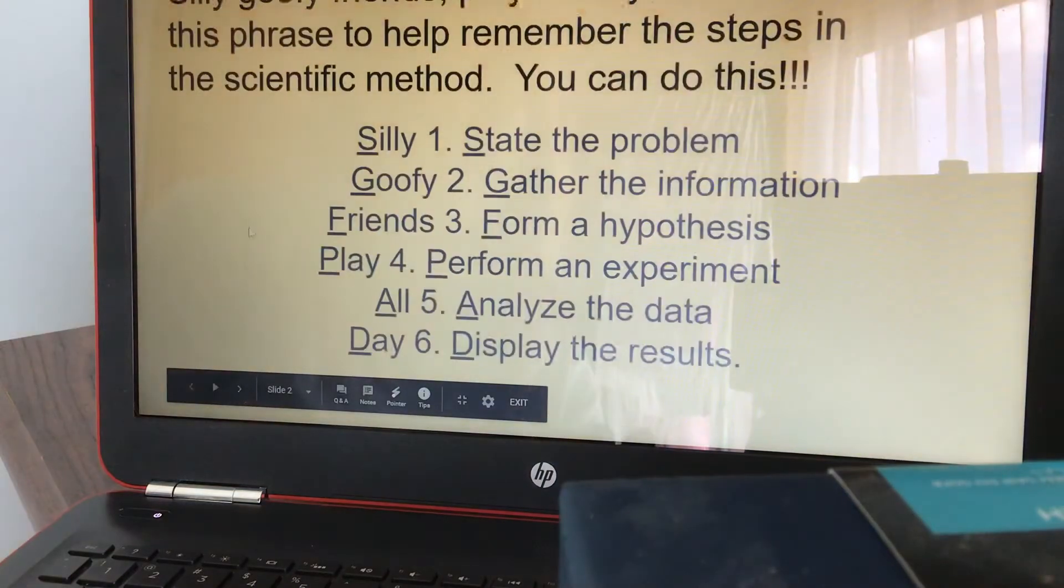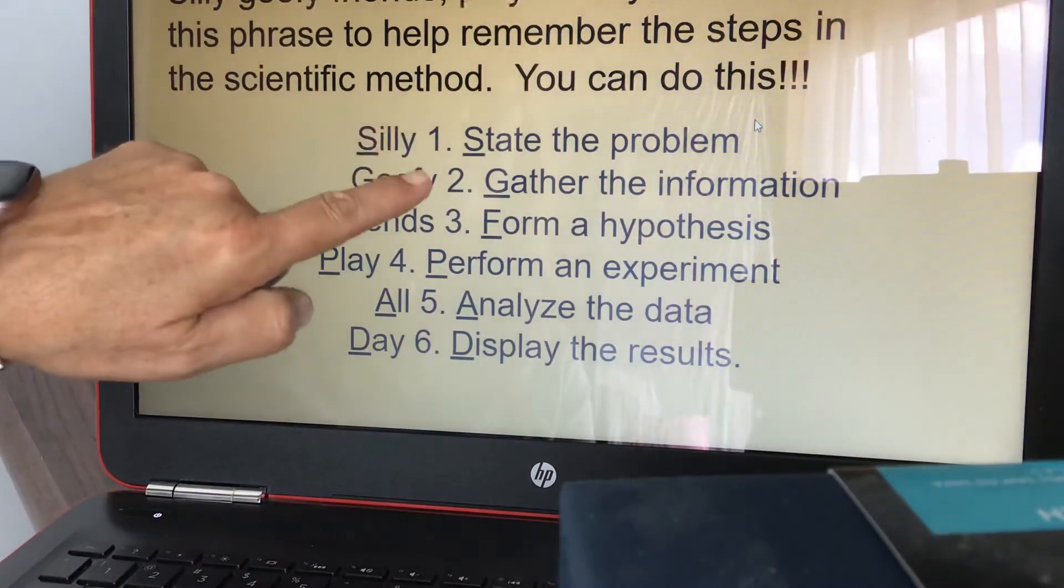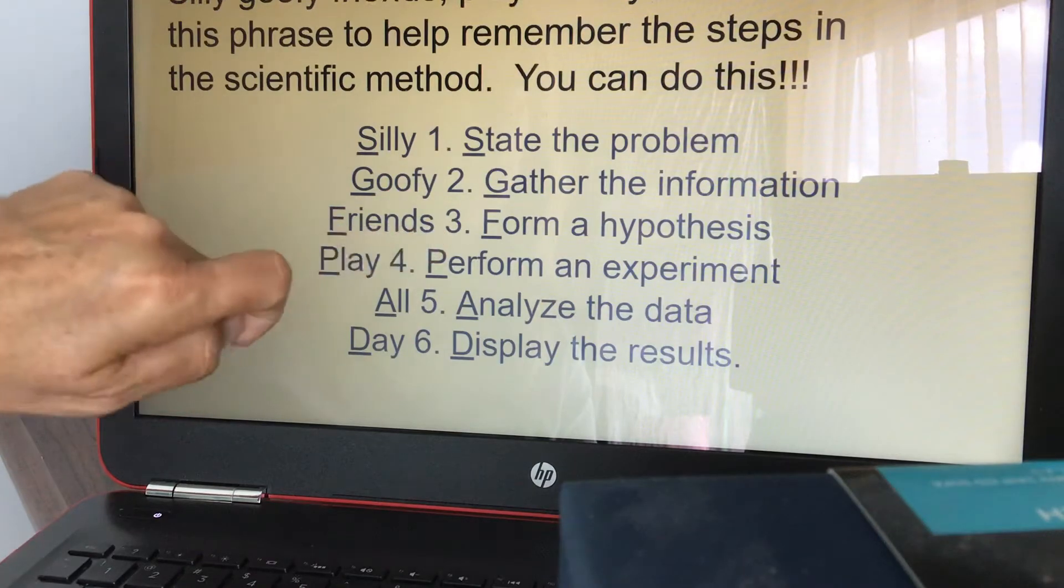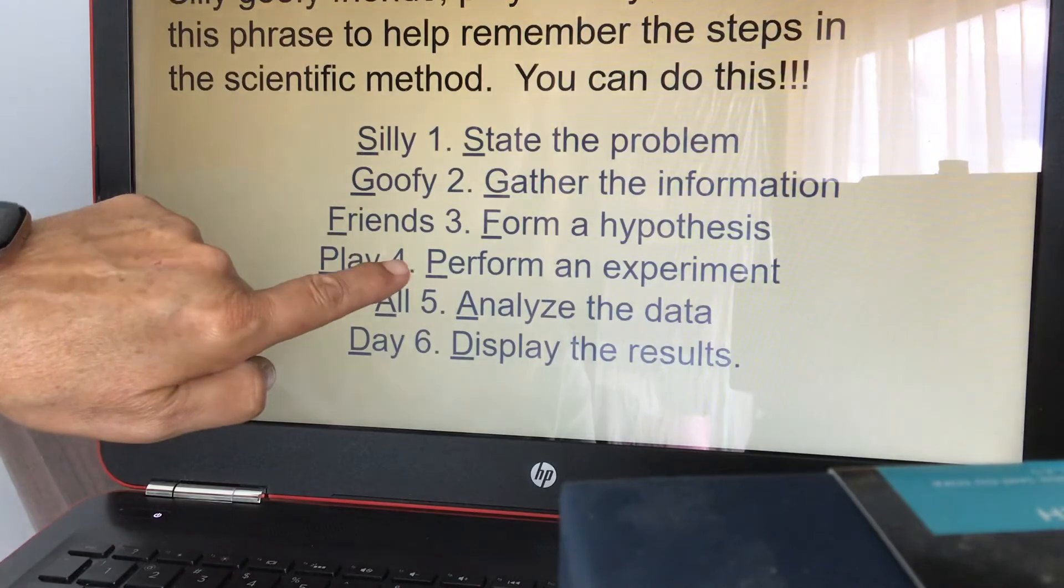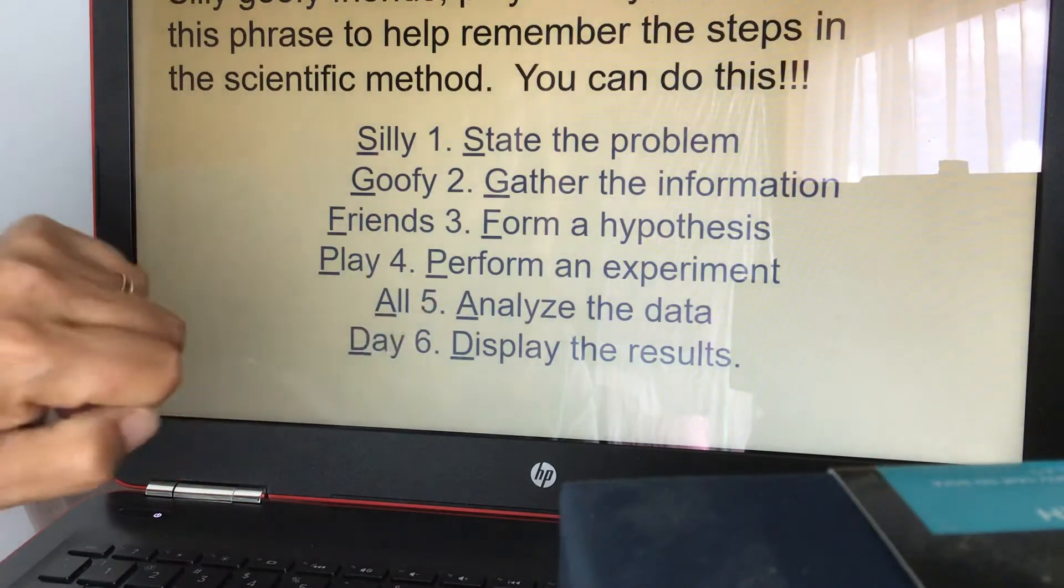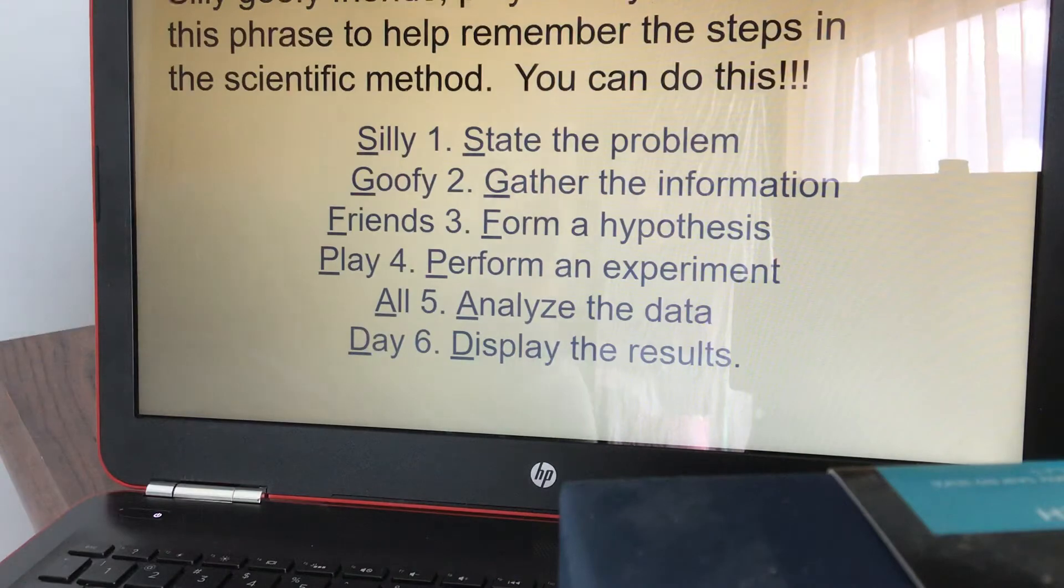So there's the six steps. The first step is state the problem and the second step is gather the information. The third step is form a hypothesis and the fourth is perform an experiment and the fifth is analyze the data and the sixth is display the results.